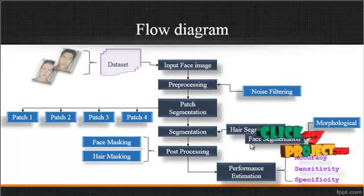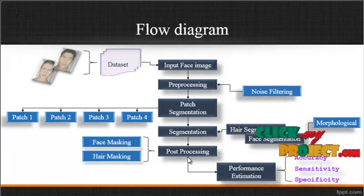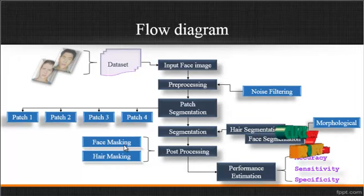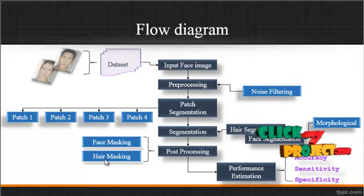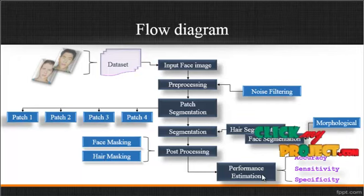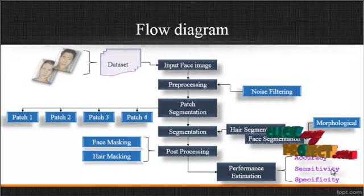After both hair segmentation and face segmentation, post-processing is carried out. In this post-processing, we perform face masking and hair masking. In the face masking process, we mask the region detected as a face region. In the hair masking step, we mask the region identified as a hair region. After these two steps, we estimate the performance using accuracy, sensitivity, and specificity to justify whether our process is efficient or not.